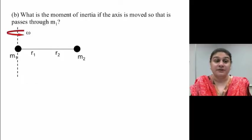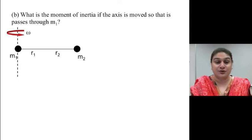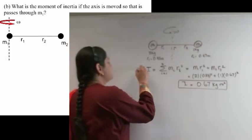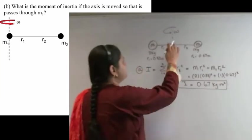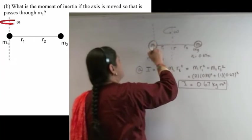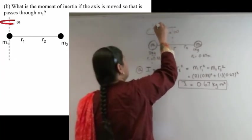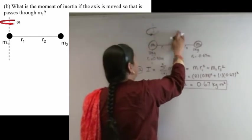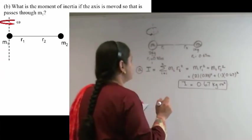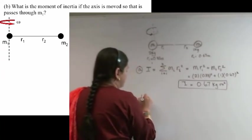So now for part b, what is the moment of inertia if the axis is moved so that it passes through m1? Well, in that case, what will happen? So for part b, I am going to say that the axis of rotation has moved from there to now being located here. So the omega has now changed from this way to that way. So this omega goes away, and now for part b, I have this as an axis of rotation.